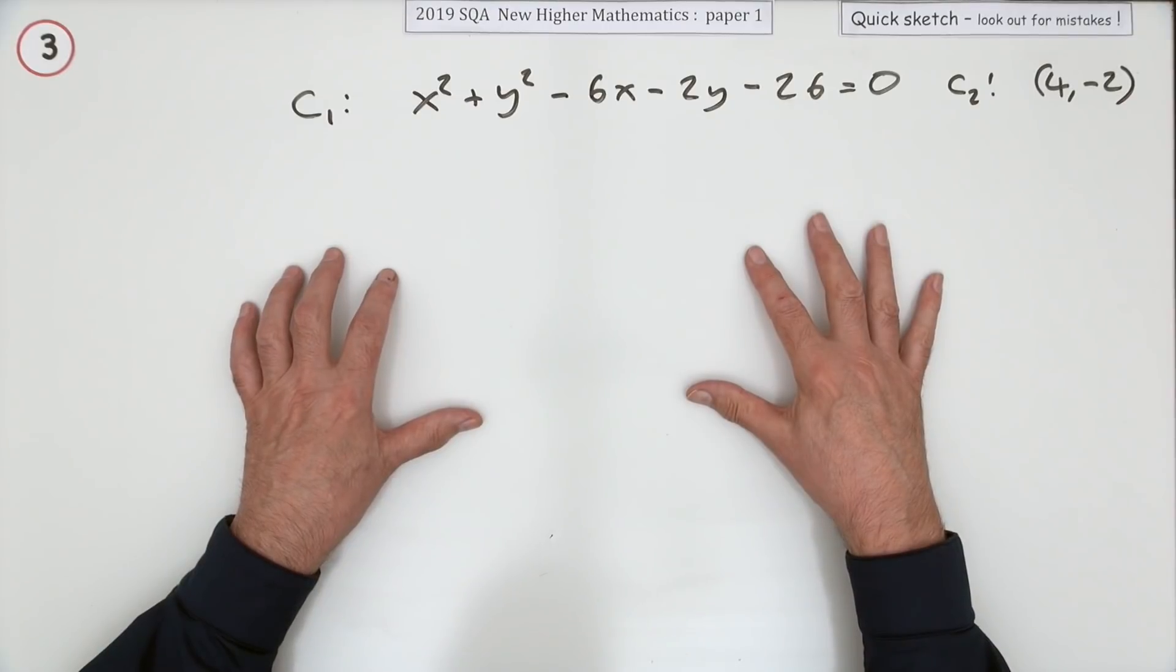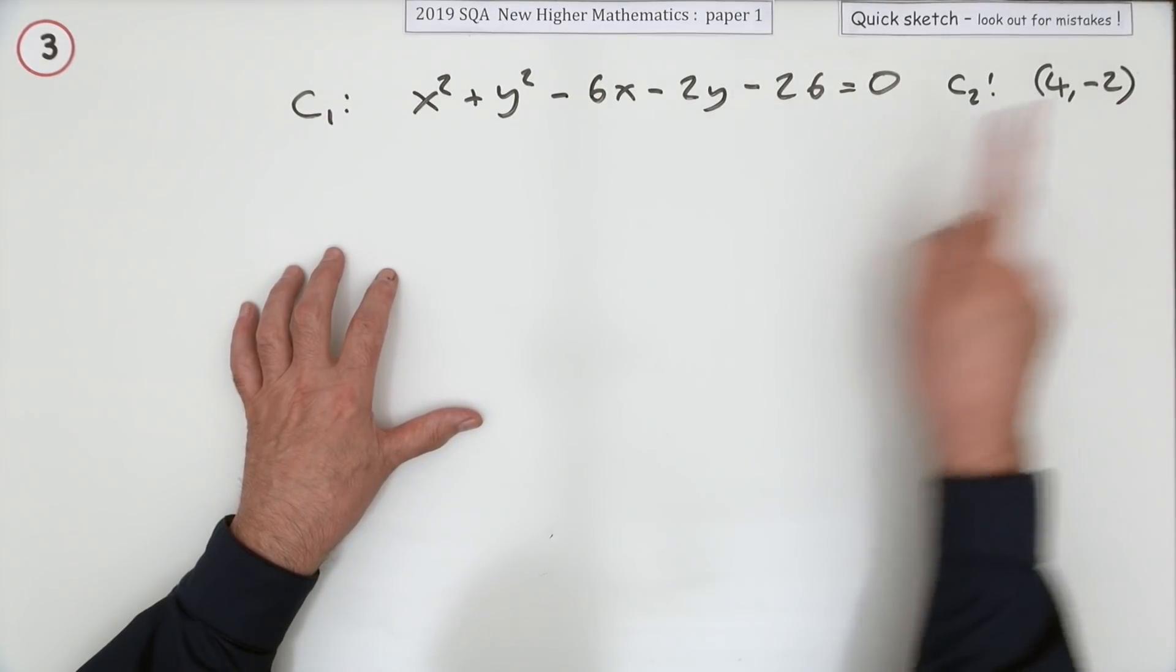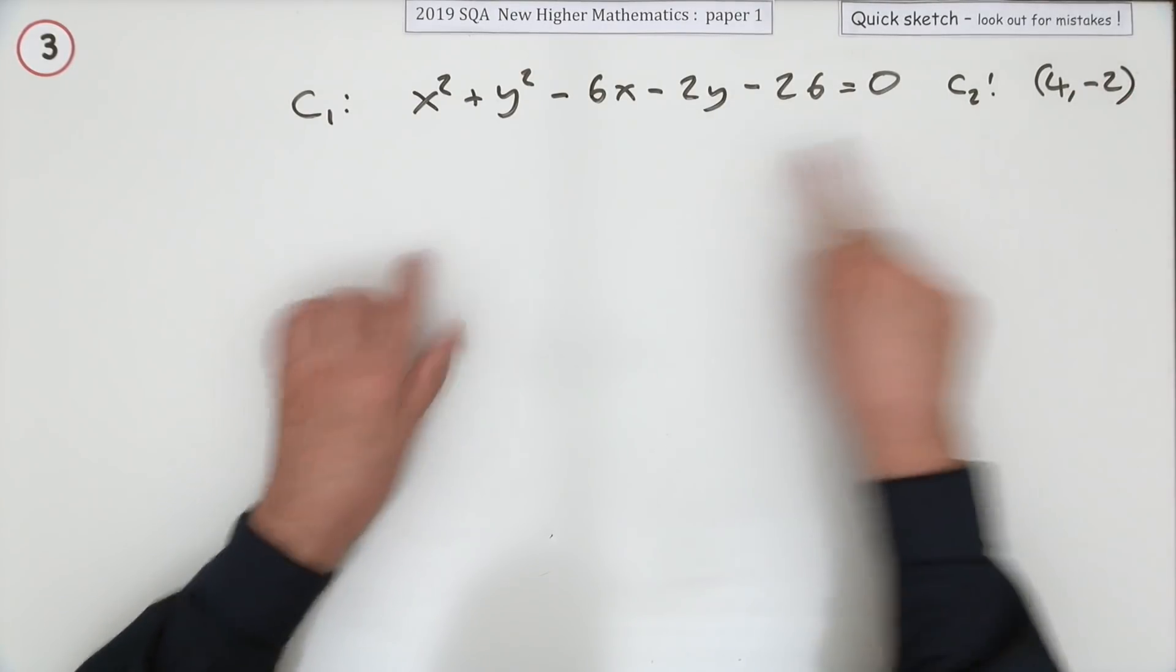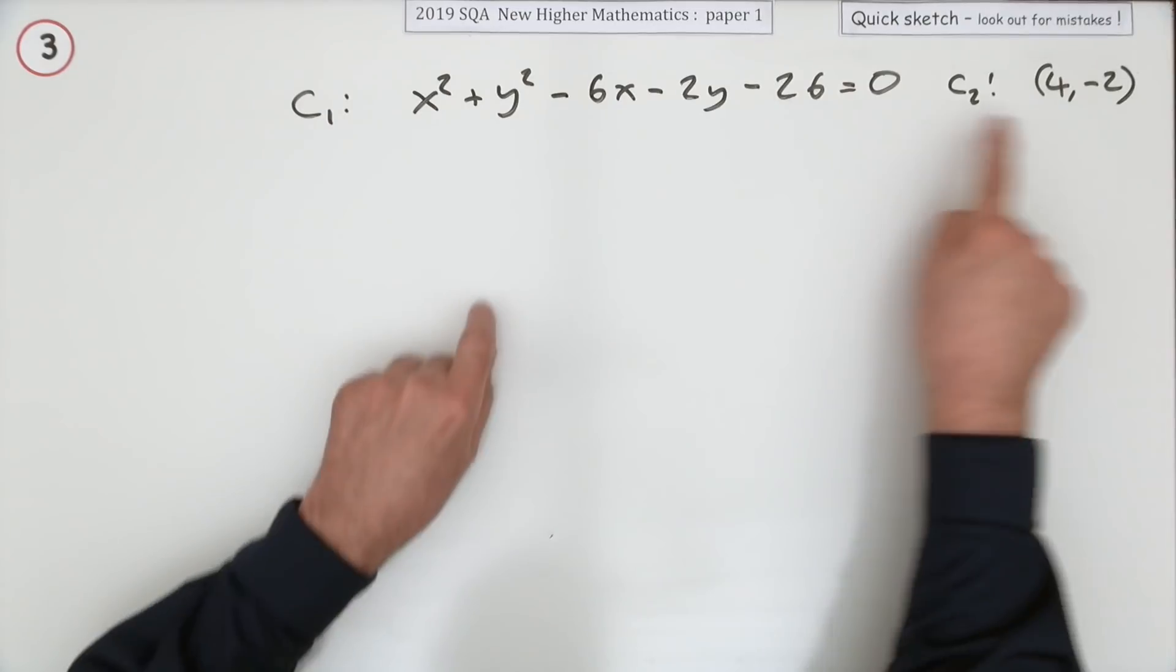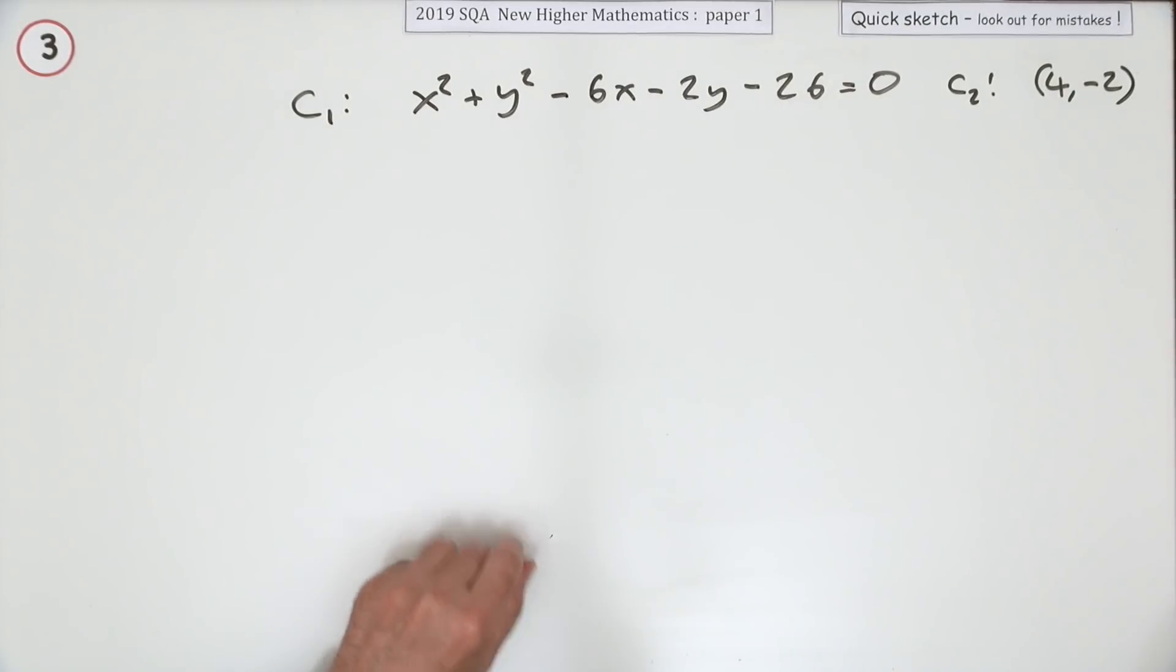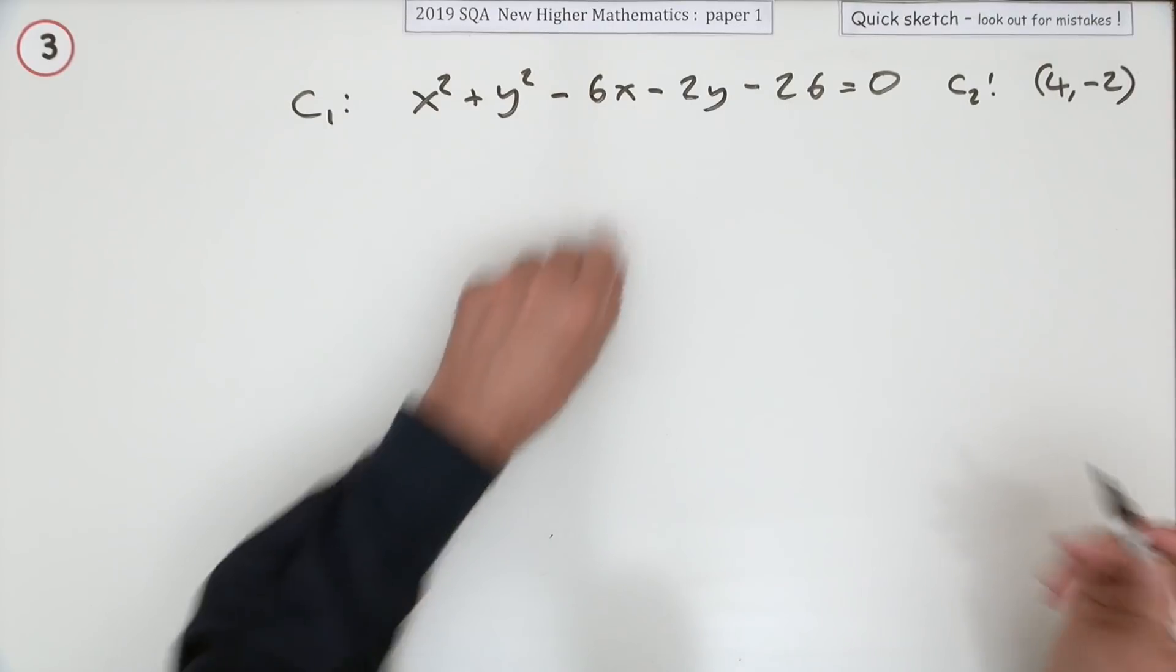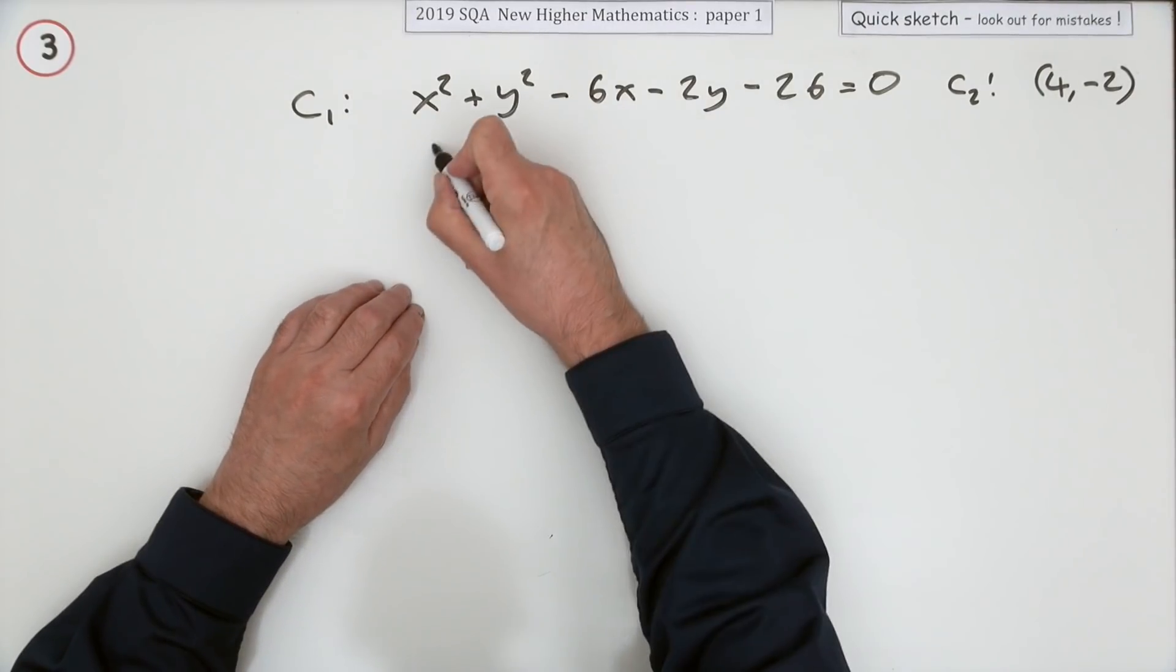Well to get the equation of a circle you need two things. Its centre, got it, its radius, it's hidden in here somewhere because it's got the same radius as this one. Only to find the radius of this one you'll first have to get its centre.